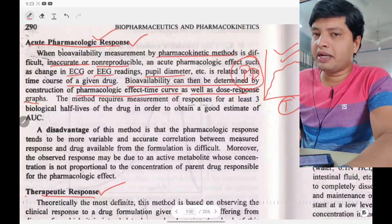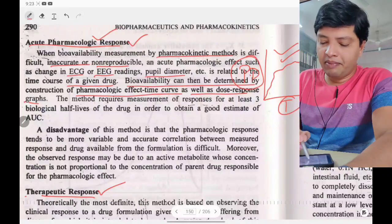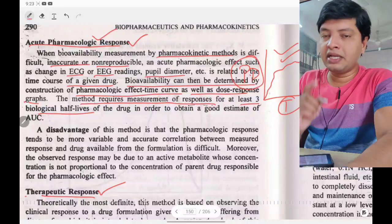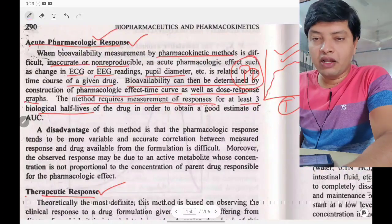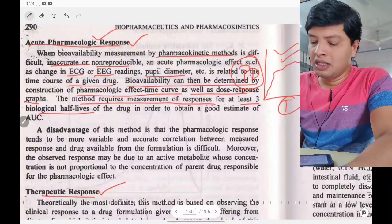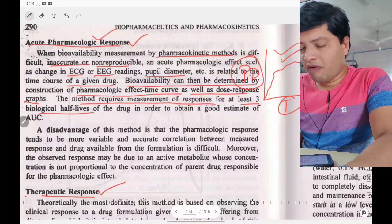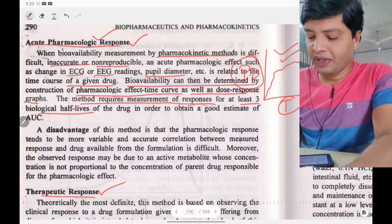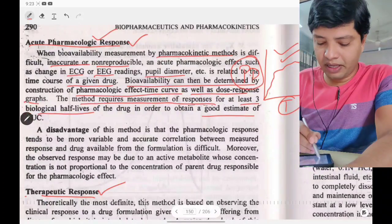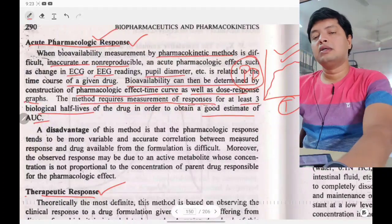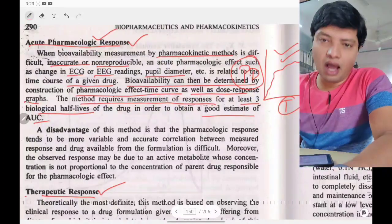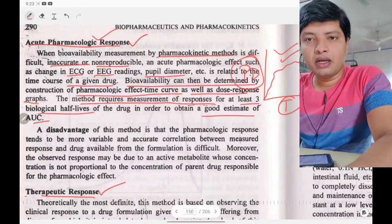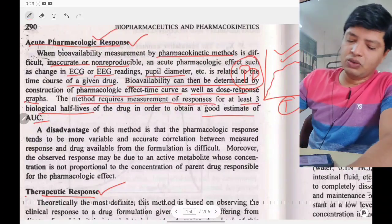The method requires measurement of pharmacological responses for at least three biological half-lives of the drug in order to obtain a good estimate of the AUC. If you can measure the response up to three biological half-lives, the AUC calculation will give reliable results.